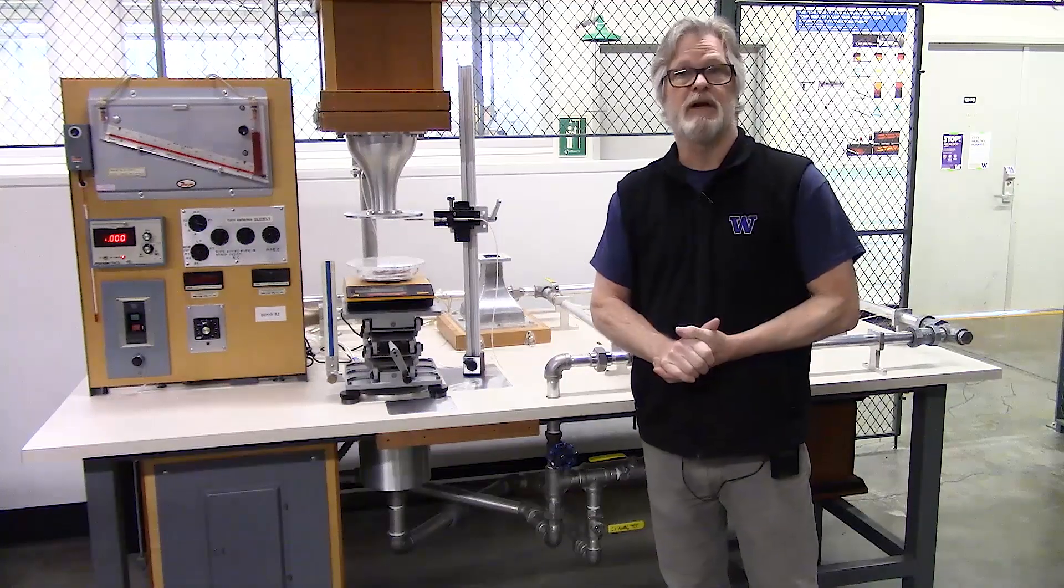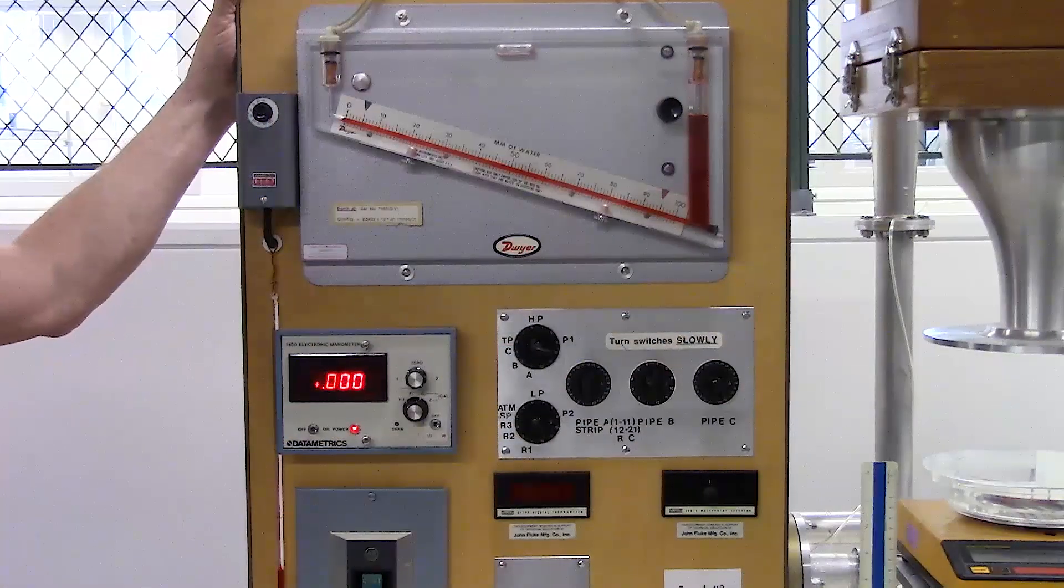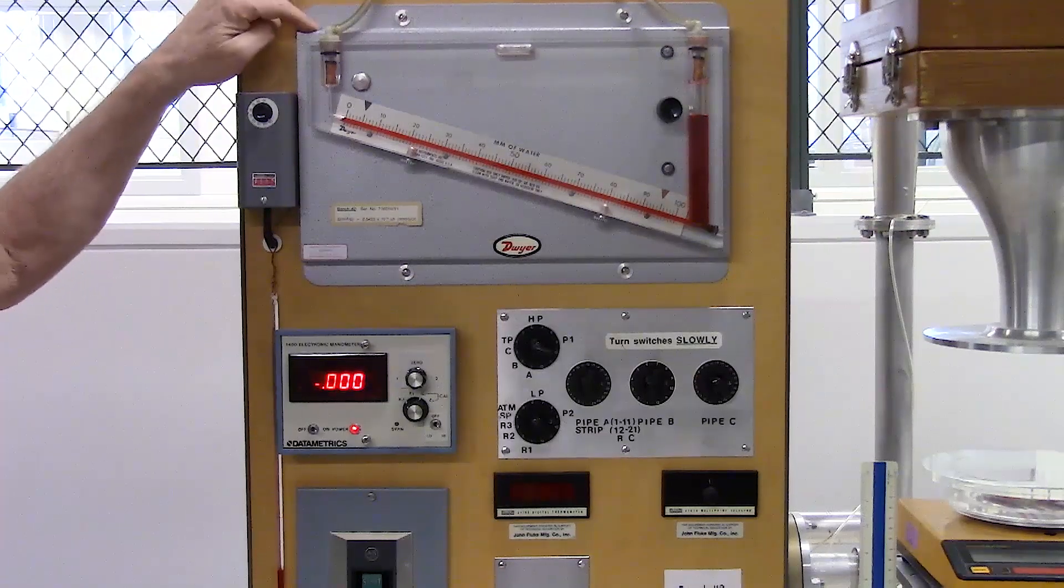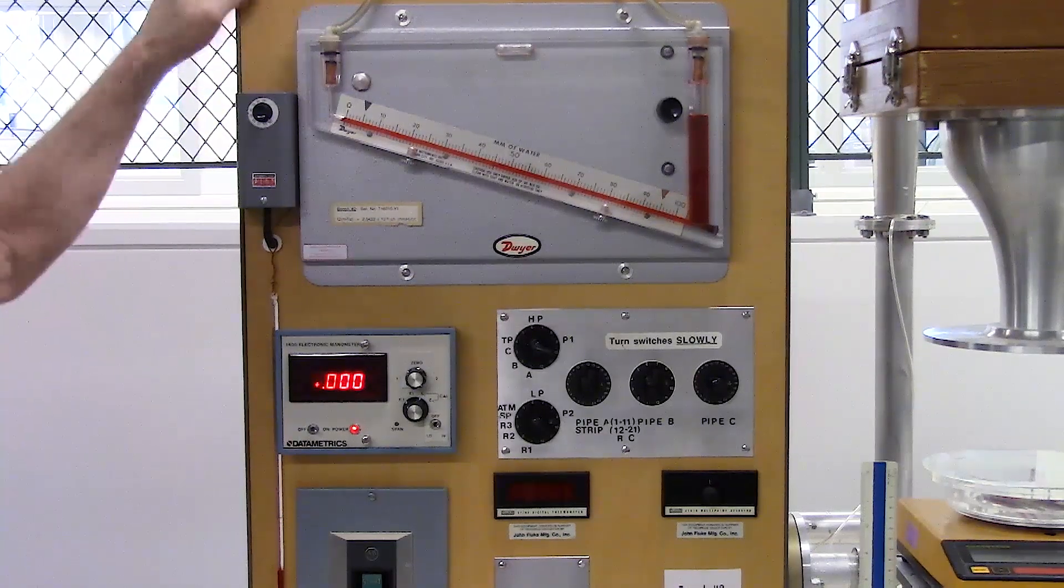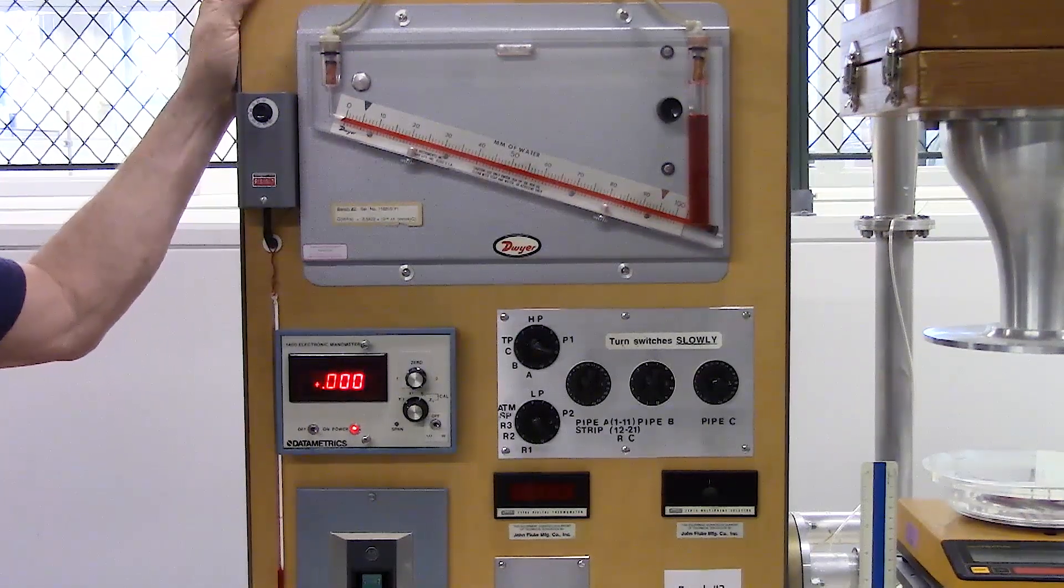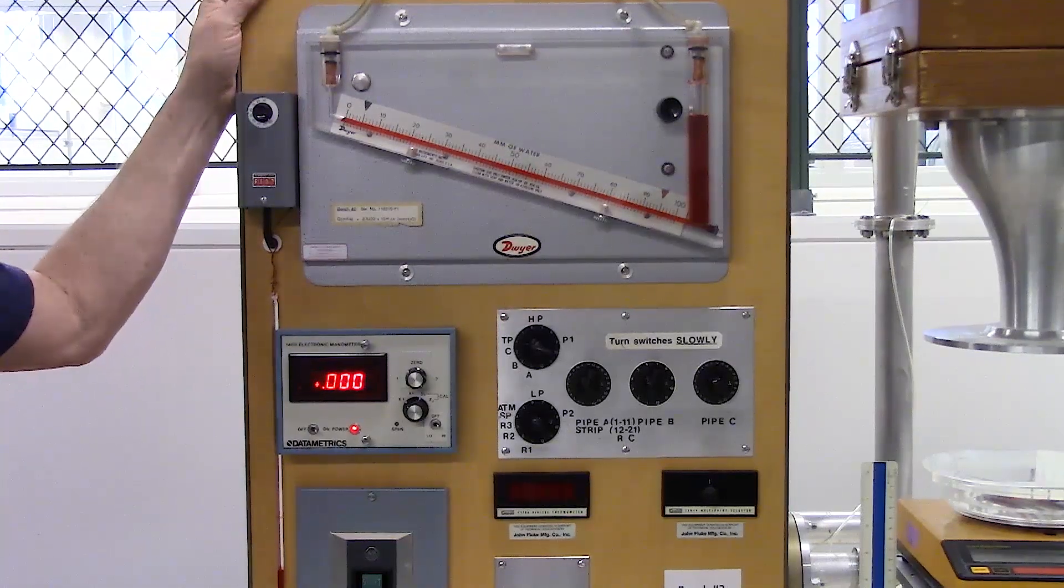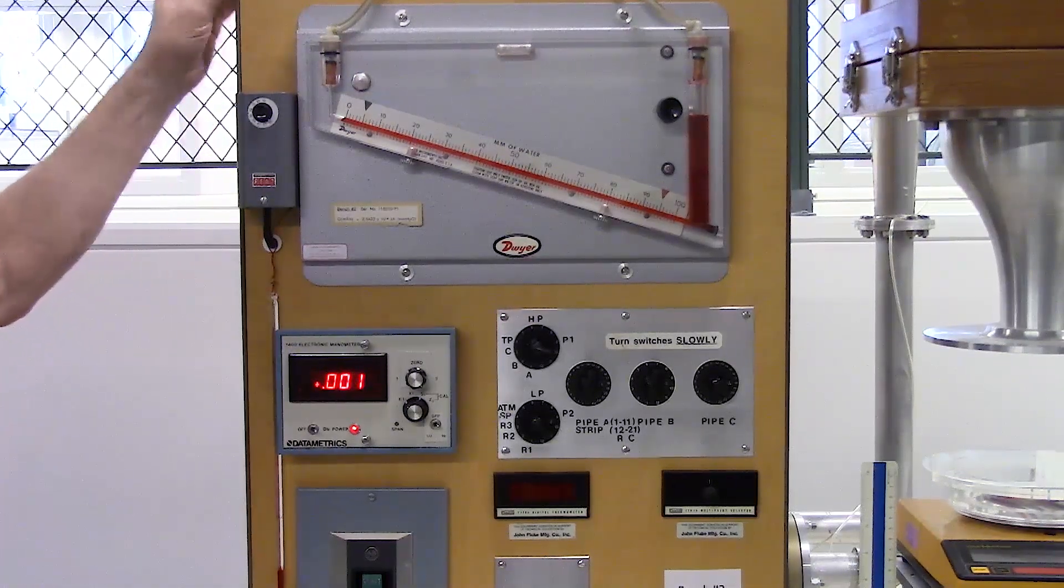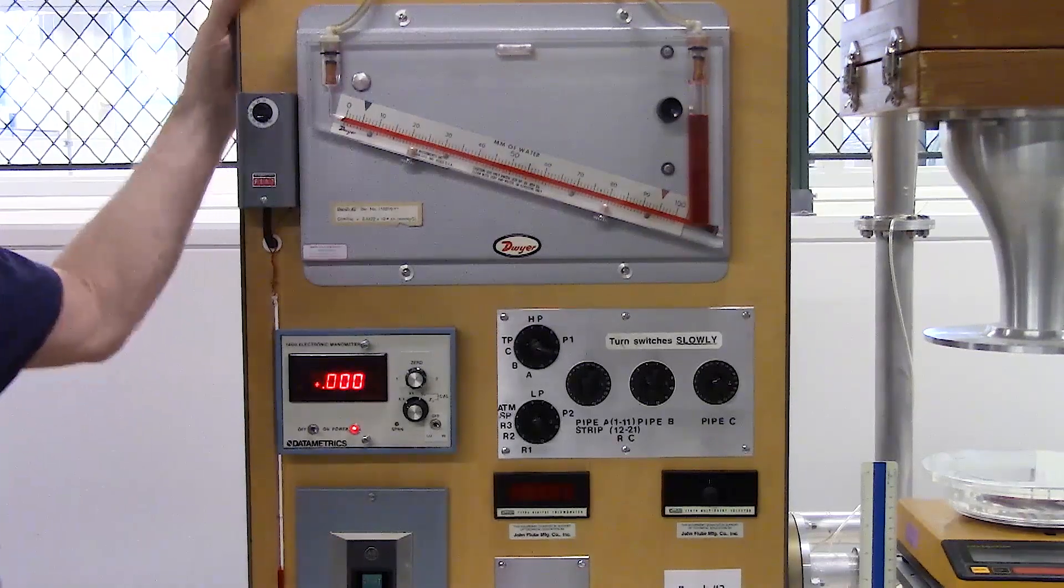Let's start with the instrument panel. To measure the flow through the system we have this incline manometer that's connected to either side of a laminar flow element. The pressure drop across the flow element is a measure of the volumetric flow rate in cubic meters per second and we can make that conversion using the calibration constant provided with the laminar flow element.